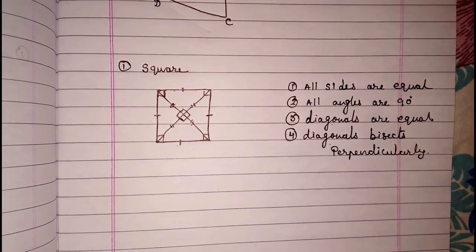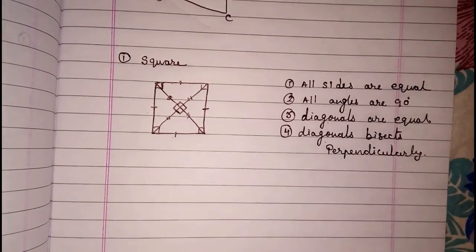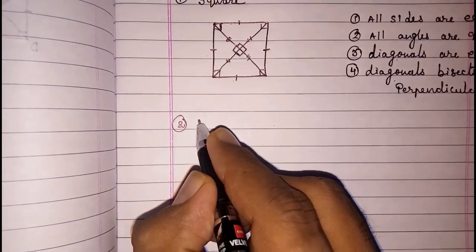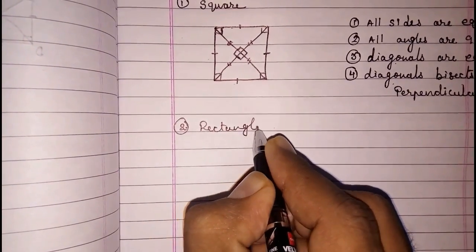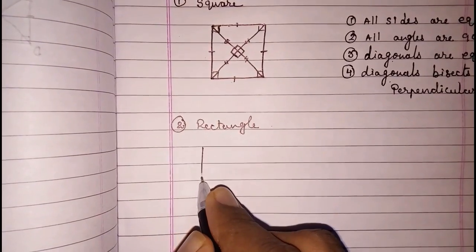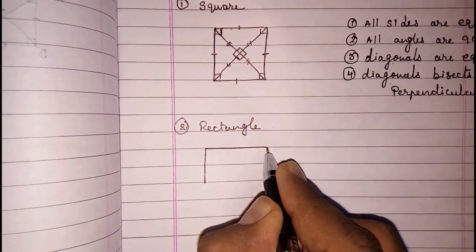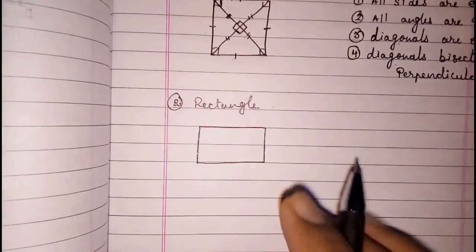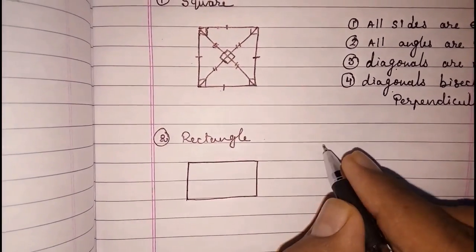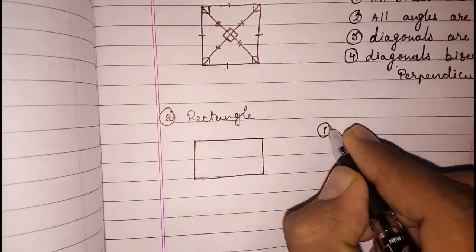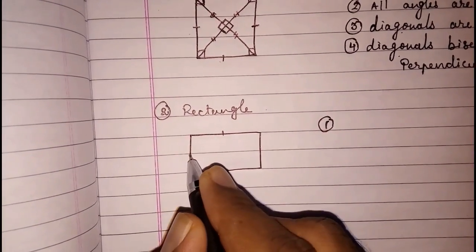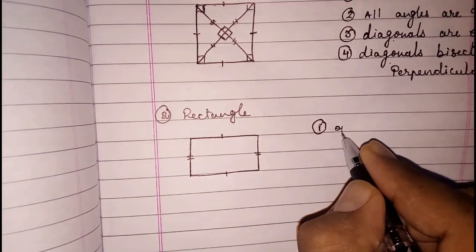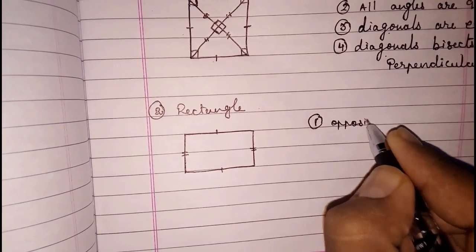Next we are going to study the second type of quadrilateral, which is the rectangle. This is a rectangle. The first property of a rectangle: opposite sides are equal. Look here — these two sides are equal, and these opposite sides are equal.